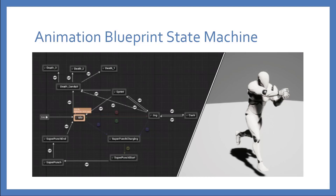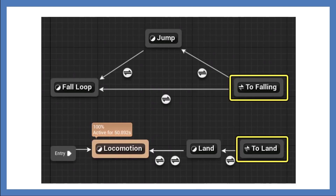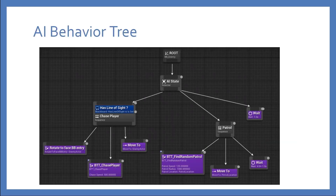All these are states — each one is a state. So if I'm in the idle state, from the idle state to the sprint state if I press a certain button or press Shift on the keyboard. If the player is dead, play the death animation, the death state animation. All these are considered a state machine, a state design pattern. Another example is jumping to falling to landing — all these are state machines inside the animation blueprint graph.